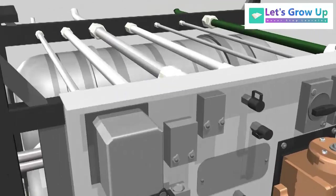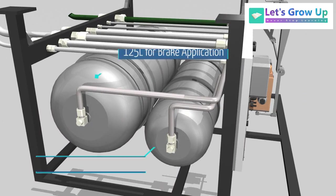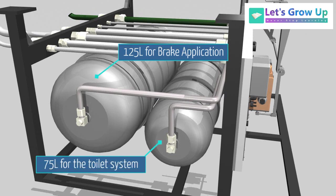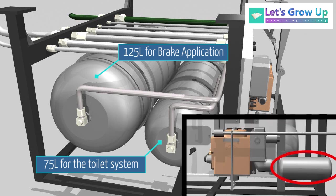The main reservoir is 125 liter for brake application, protected by a check valve. The auxiliary reservoir is 75 liter for the toilet system, and control reservoir is 6 liter.